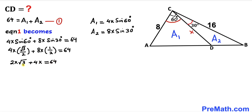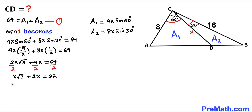All terms are divisible by 2, so dividing across by 2 gives us x√3 plus 2x equals 32. Since x is a common factor, we factor it out to get x times (2 plus √3) equals 32.